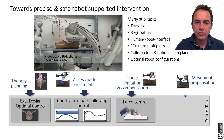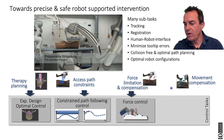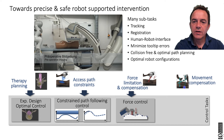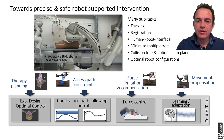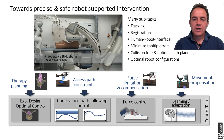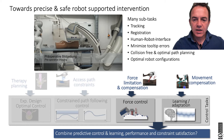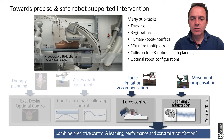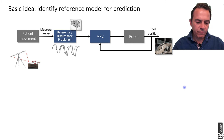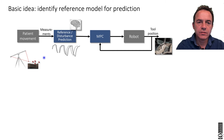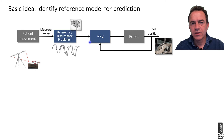Movement compensation is a very important point. How do I compensate patient movements? Because the patient will be moving and breathing. This is the purpose of the following section: we want to use learning to compensate these movements. We want a combined controller — a predictive controller plus a learned component for achieving good constraint satisfaction. The basic idea is shown in this image: here we have the patient, we might measure with a sensor, and you give the reference/disturbance prediction — done with learning — to the robot.